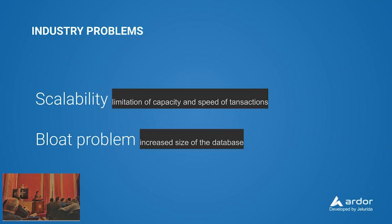The common problems with conventional blockchain networks are scalability and blockchain bloat. Scalability is related to the limitation of capacity and speed of transactions, while the bloat problem is related to the increment of the size of the blockchain.